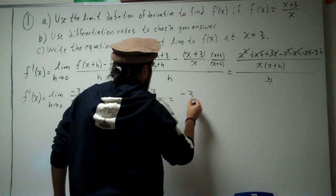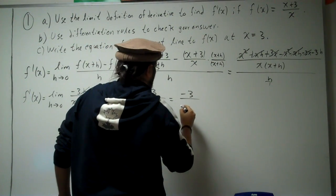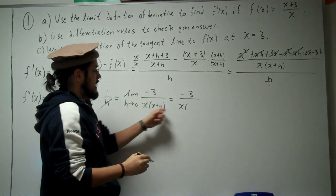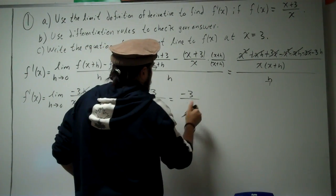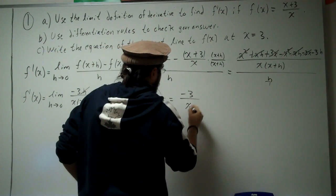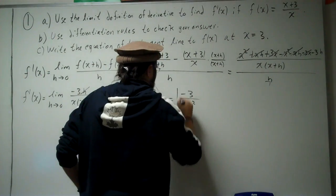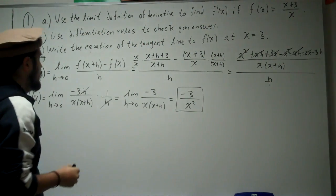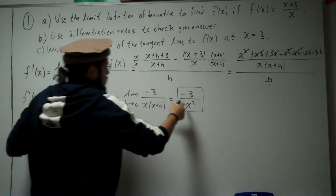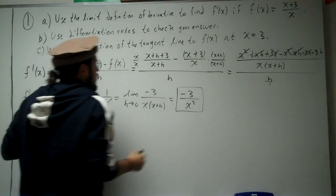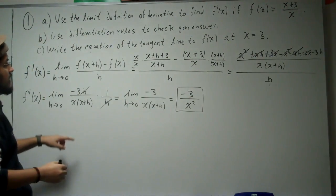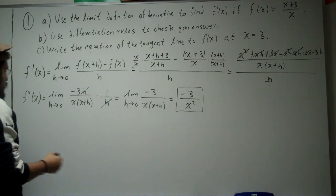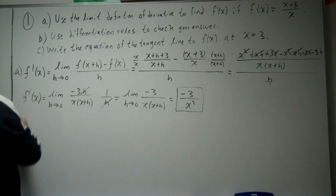Now we plug in 0 for h. We get negative 3 divided by x times x, which is x squared. So according to the limit definition of derivative, f prime of x equals negative 3 divided by x squared. Now let's prove that using differentiation rules in part B.